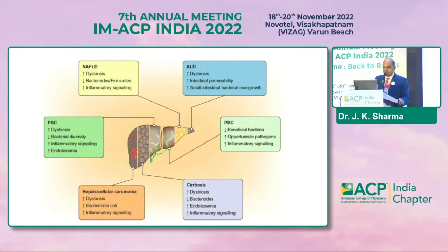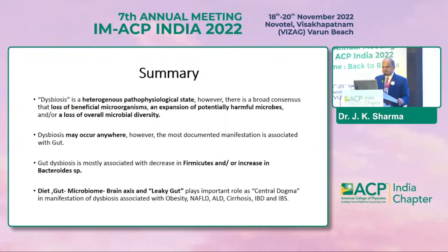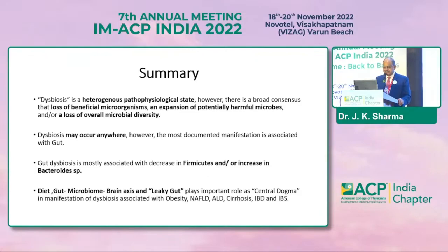Dysbiosis is a heterogeneous pathophysiological state. There is broad consensus that it involves loss of beneficial microorganisms, expansion of potentially harmful microorganisms, and/or loss of overall microbial diversity. It may occur anywhere in the body, but the most documented manifestation is associated with the gut — most often a decrease in Firmicutes and increase in Bacteroides. Diet, gut microbiome, brain axis, and the leaky gut play a central role in the manifestation of dysbiosis associated with obesity, NAFLD, alcoholic liver disease, cirrhosis, IBD, and IBS.